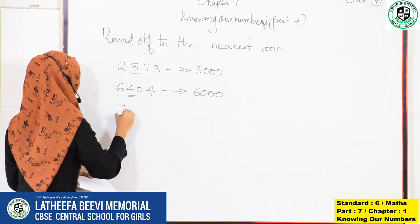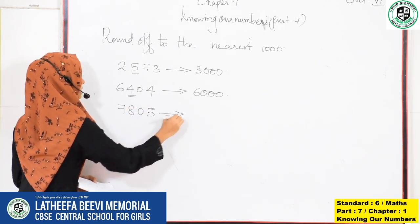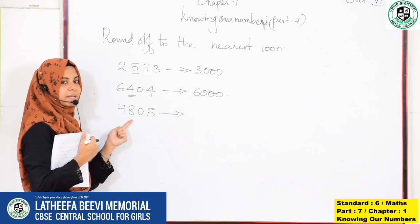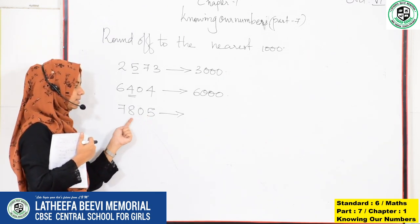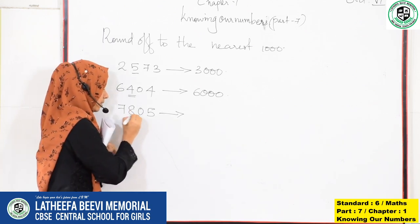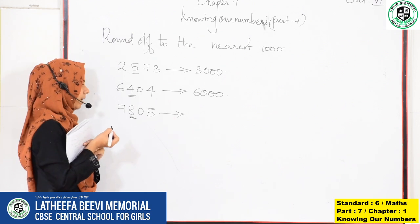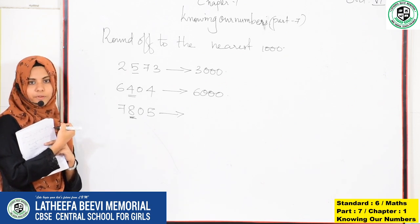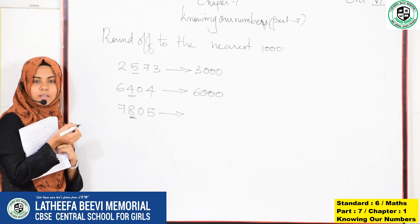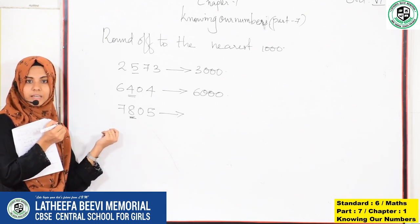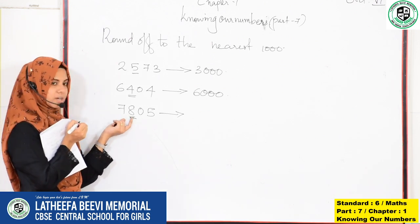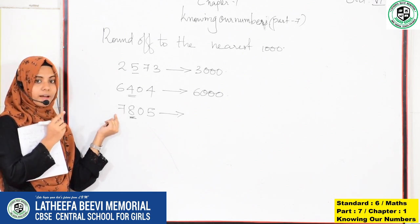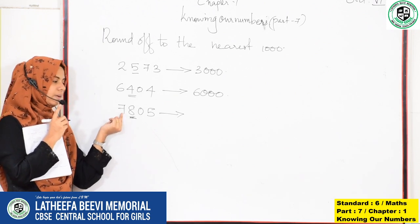One more example. We know that 8 is greater than 5, so we want to round off it to the highest nearest thousand. To find the highest nearest thousand, we add 1 to the thousands digit. 7 plus 1 is 8, so the result is 8,000.